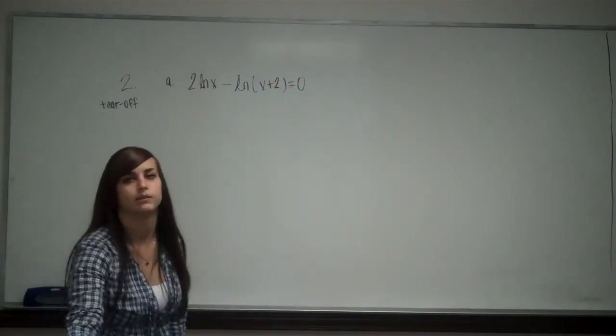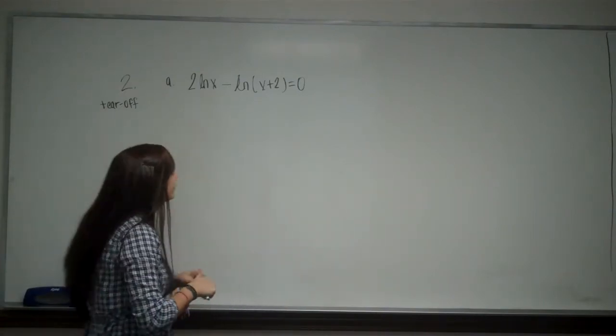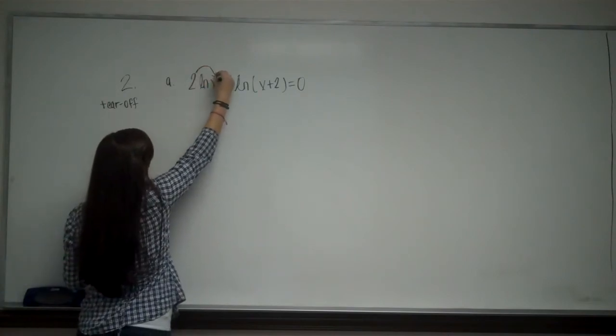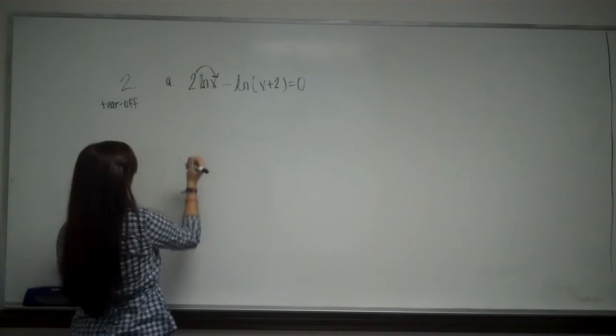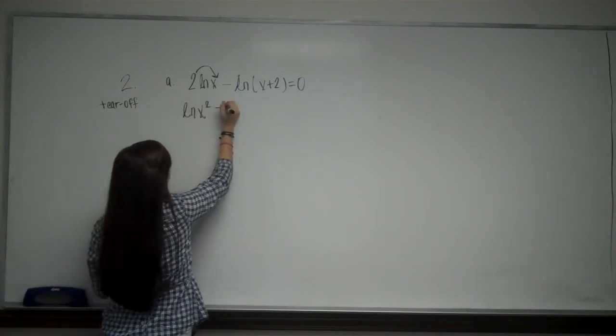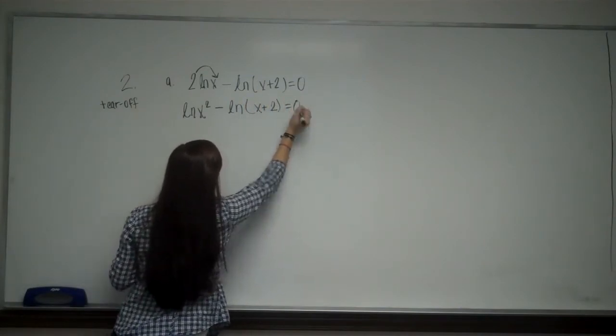So on this one we are going to use some of those pre-calc skills of the rules of natural log and log. So from here, remember if I have a number in front, it goes to the exponent on natural log. So I can rewrite this as ln of x squared minus ln of x plus 2 equals 0.